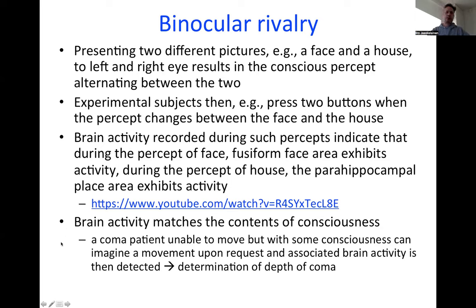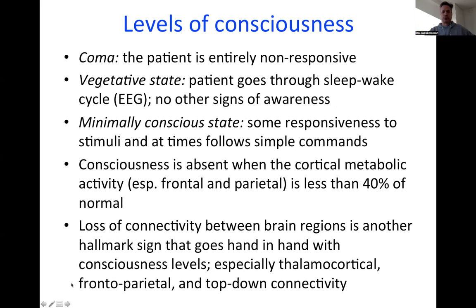Something important that Fritt brings up is that brain activity matches the contents of consciousness. A coma patient unable to move but with some consciousness can imagine a movement upon request, and the associated brain activity is then detected. This is a method that can be used to determine the depth of a coma — even if the patient cannot externally indicate any consciousness, we can use brain imaging methods to help determine that yes, there is some consciousness.